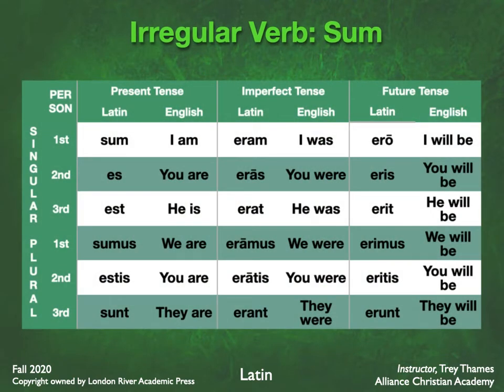Sum, es, est, sumus, estis, sunt. That's the present tense, and you translate it: I am, you are, he is, we are, you are, they are. Notice how the imperfect doesn't look anything like sum, es, est, sumus, estis, sunt — it's irregular, so we just have to learn these patterns, but they're pretty easy to remember.